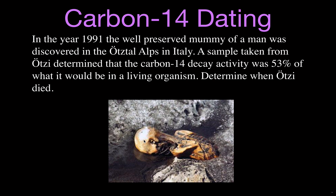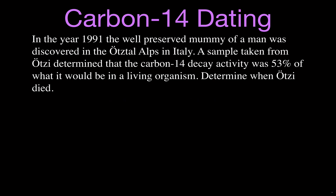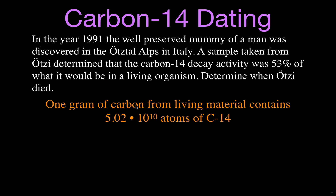We're going to figure out how long ago he died using carbon-14 dating. We need one other piece of information: one gram of carbon from a living material contains 5.02×10¹⁰ atoms of carbon. Remember, there are three naturally occurring isotopes of carbon — carbon-12, carbon-13, and carbon-14. Carbon-12 and carbon-13 are stable. Carbon-14 is radioactive and will decay through beta decay to nitrogen-14. We can use that idea and the half-life of carbon to determine when Otzi died.